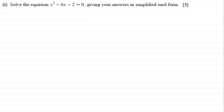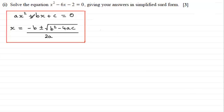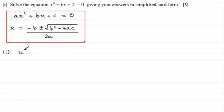Just as a quick reminder: if you've got a quadratic equation of the form ax squared plus bx plus c equals zero, then x equals minus b plus or minus the square root of b squared minus 4ac, all divided by 2a. So in the first part, using the quadratic formula for x squared minus 6x minus 2 equals zero, a is 1.